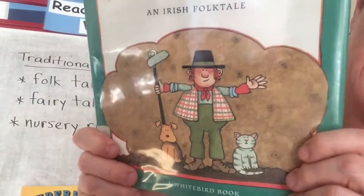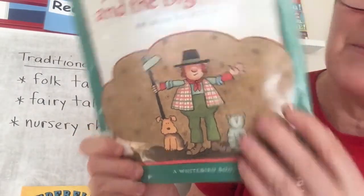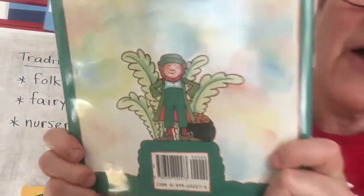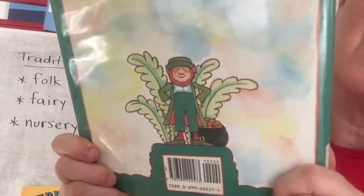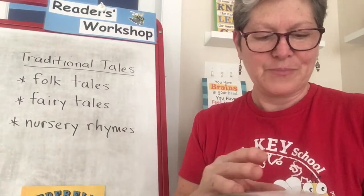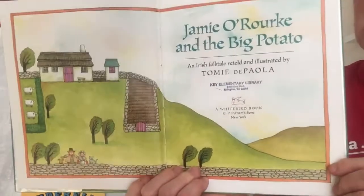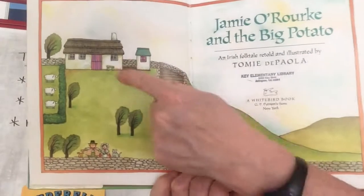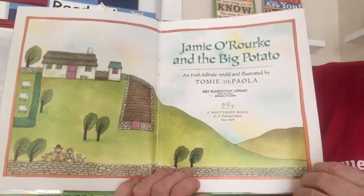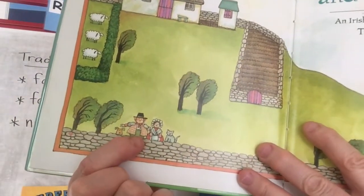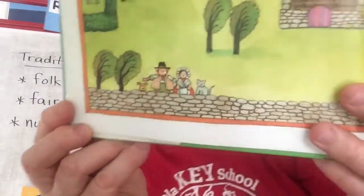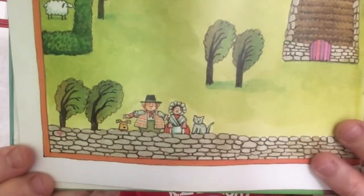I see a redheaded guy and a giant potato and a cute cat and a cute dog. And on the back is a leprechaun with a pot of gold. On the title page, I see the green, green countryside of Ireland. This is taking place in the country in Ireland, and there's a house at the top of the hill. Down at the bottom is Jamie O'Rourke and his cat and his dog. I wonder if that's his wife.